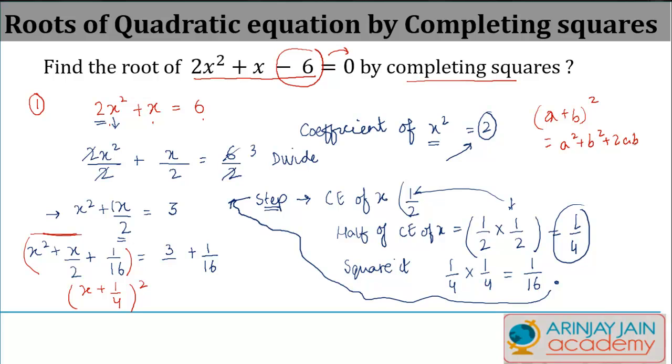This b² is nothing but 1/16, which means b has to be equal to 1/4 (because 2ab is x/2). If you resolve this, you get 16 over here. 16 × 3 gives you 48, plus 1 gives you 49.